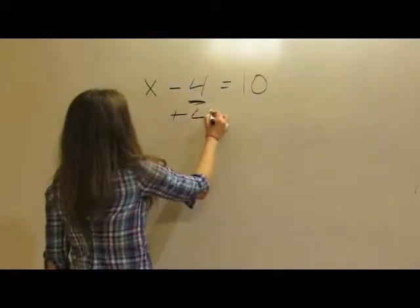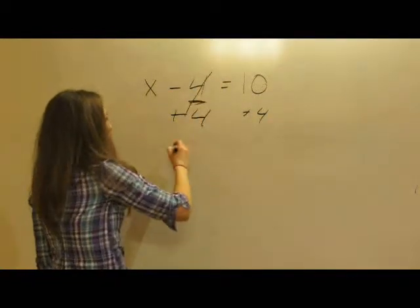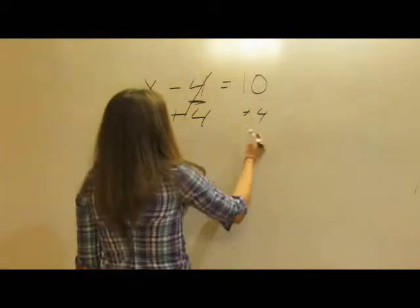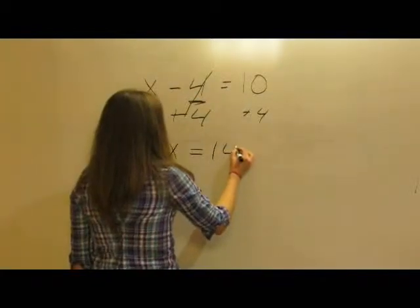So that gets rid of 4 here because minus 4 plus 4 equals 0, and over here it gives us 14. So we have x equals 14.